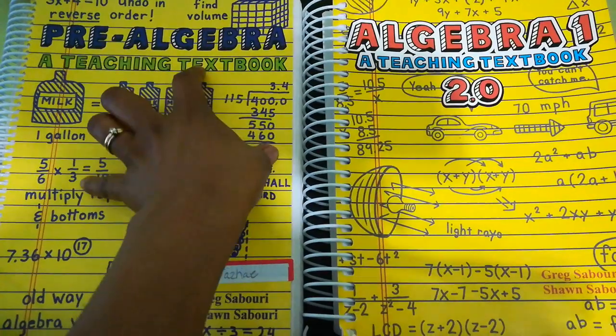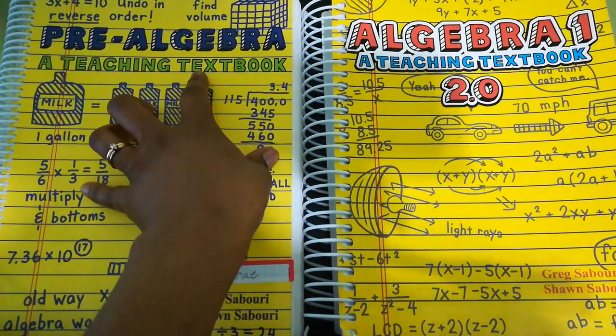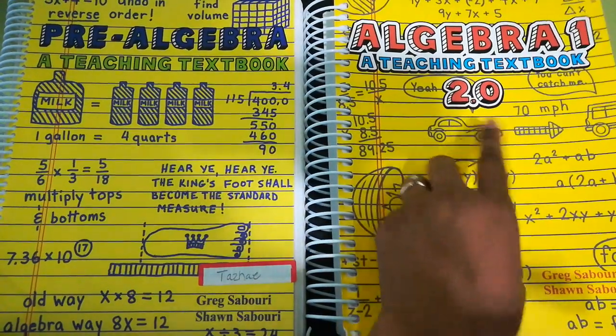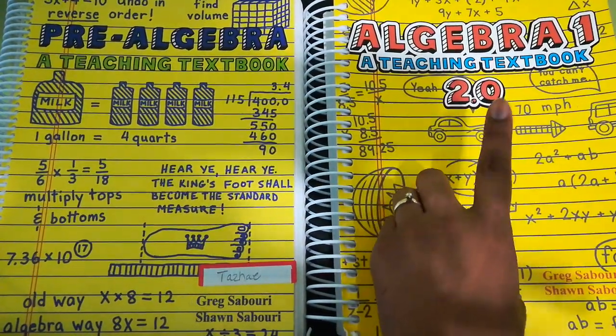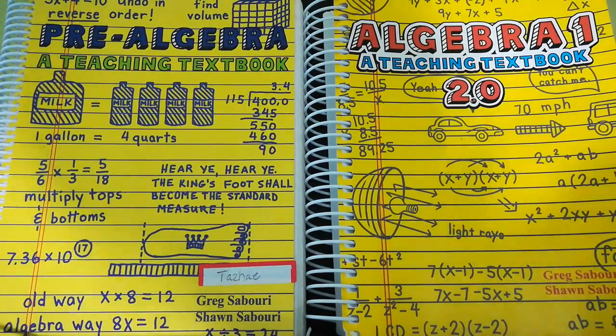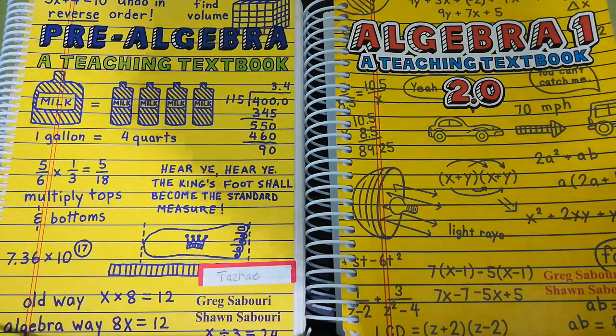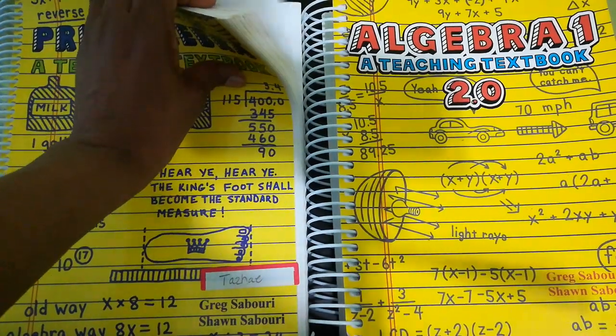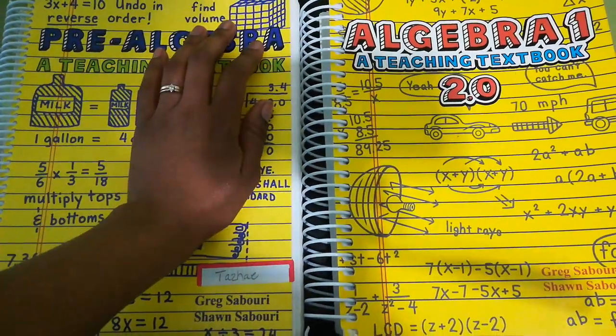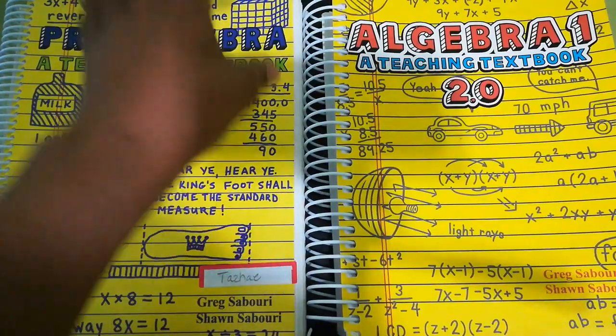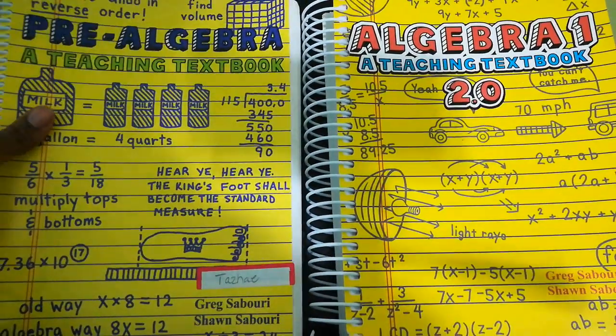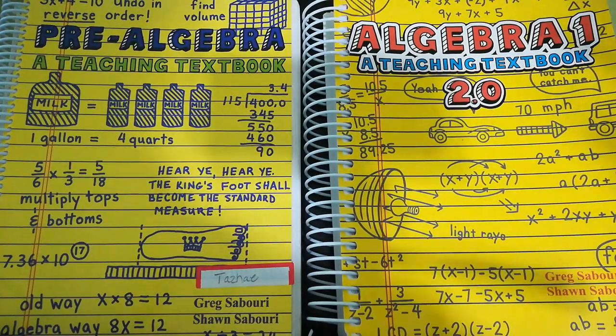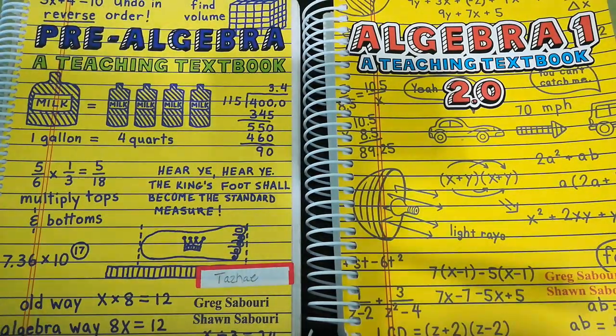So you will notice that this version is way, way cheaper when reselling it or you find it for sale. Whereas this one is still a little bit more because it has the automatic grading feature. Some people just want to get the book and the workbook. Some people just get the workbook. It's all up to you. But when you buy a complete set, it will look like this.